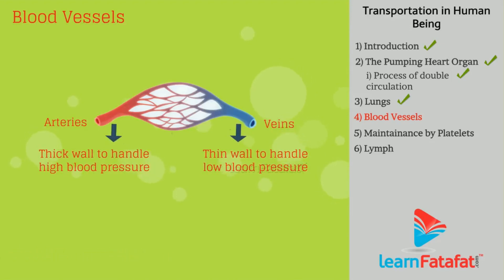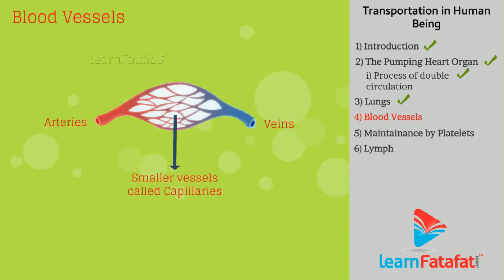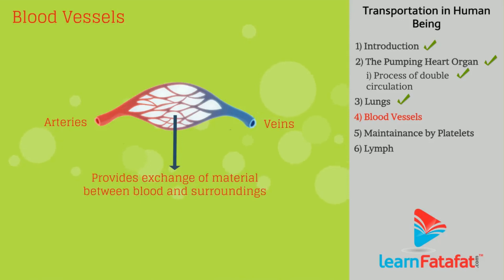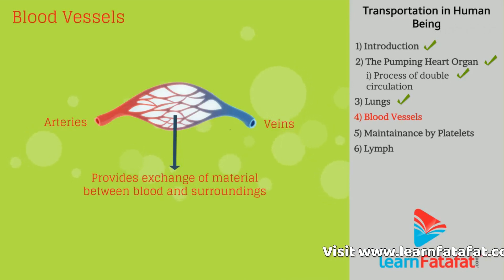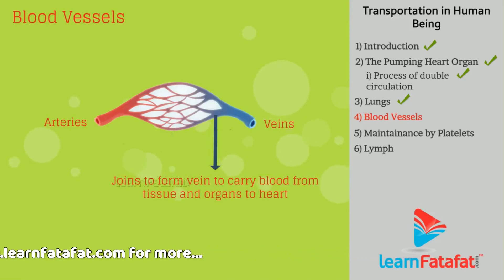To ensure blood flow in one direction, veins have valves. Arteries divide into smaller vessels to connect with individual cells — the smallest vessels are called capillaries. Capillaries have walls which are one cell thick; through this wall, exchange of materials between blood and surrounding cells takes place. Capillaries join together to form veins that take blood from tissue or organ to the heart.